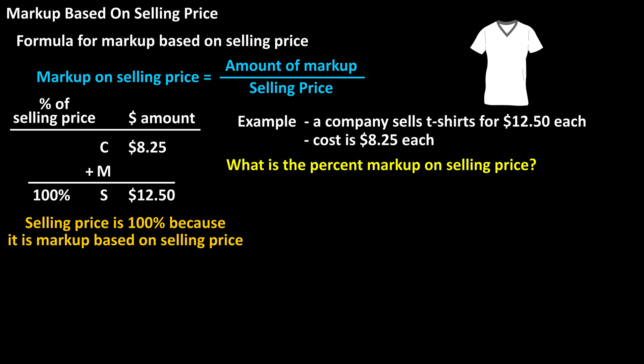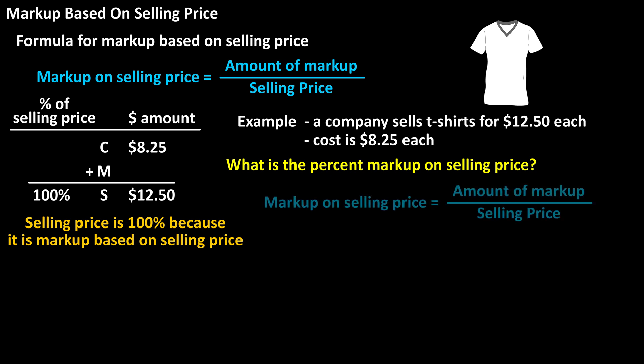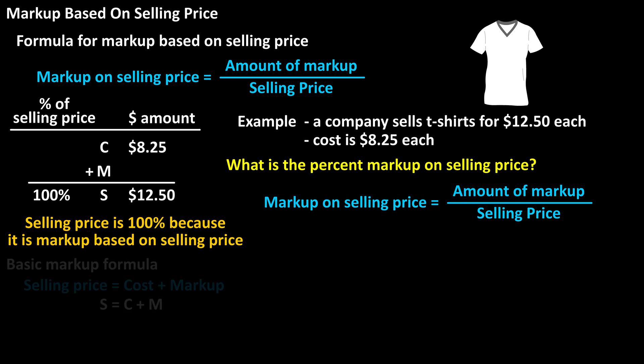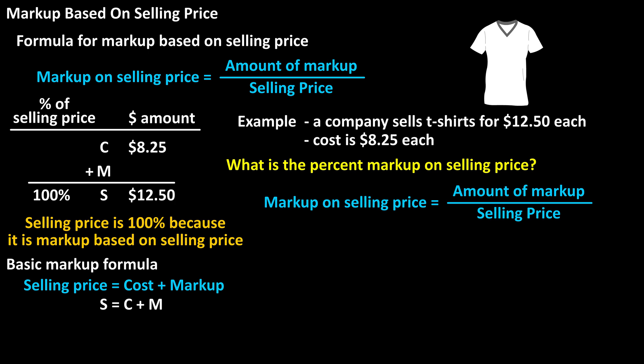Now to find the percent markup on selling price, we'll use the formula mentioned at the beginning of the video: markup on selling price equals the amount of markup divided by the selling price. But we can't use the formula just yet, because we don't know the markup amount, so we need to find it using the basic markup formula: selling price equals markup plus cost.